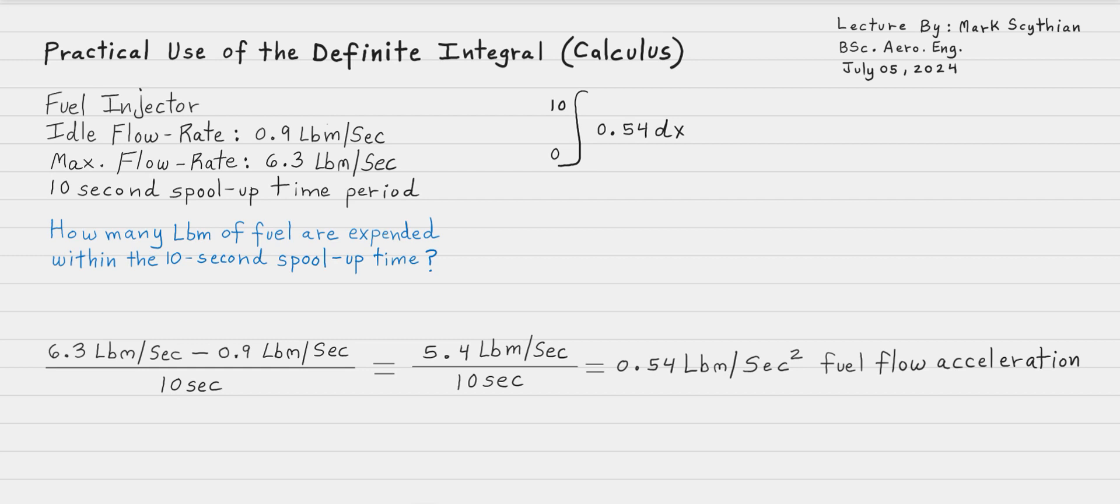If we take it back to the first derivative, then we can get a rate of flow, not the change in rate of flow, the pounds mass per second squared. We would just get pounds mass per second at a specific time period over the 10-second time period. So we have to take 0.54 derivative of x dx. If we obey the rules for integration, we're going to increase the base power value by one.